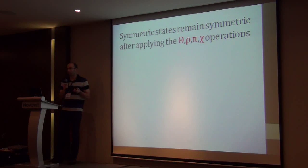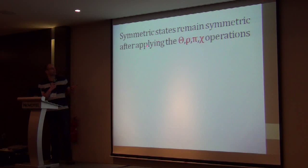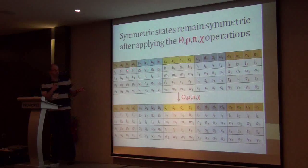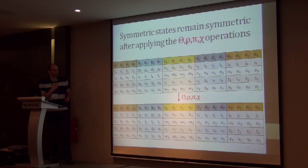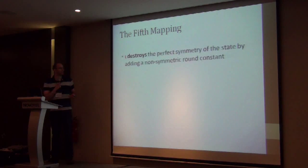We look at symmetric states because the translation invariance property implies that symmetric states remain symmetric after applying any of the first four Keccak mappings. So if we start with a symmetric state and apply any of those four mappings, we end up with another symmetric state — not necessarily equal, but also symmetric. However, the fifth mapping, Iota, destroys the symmetry.